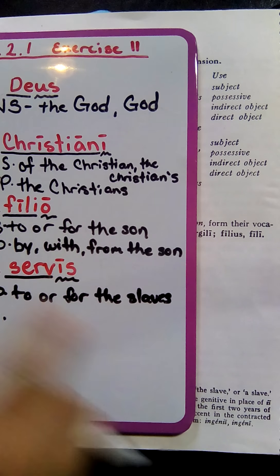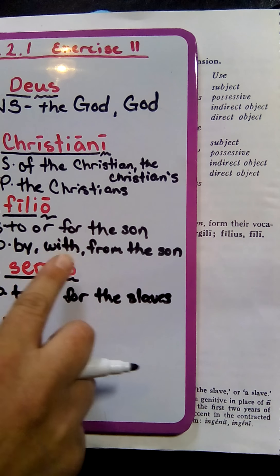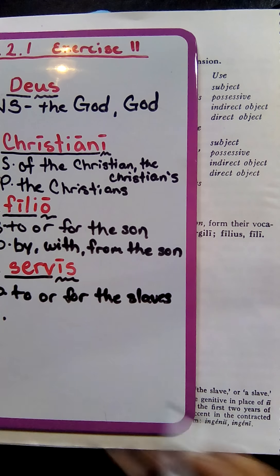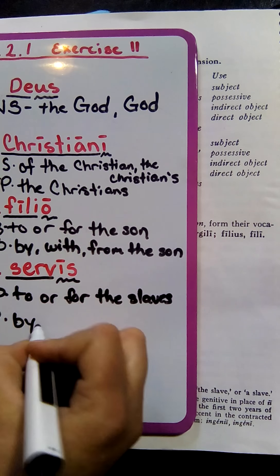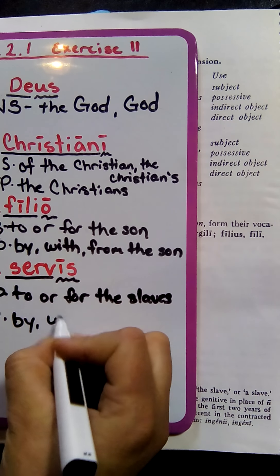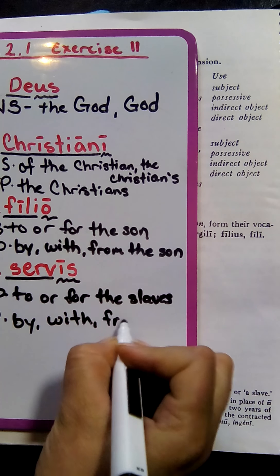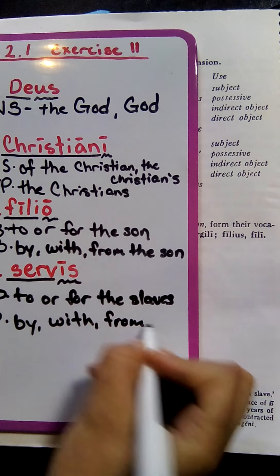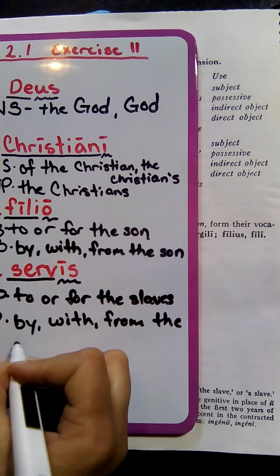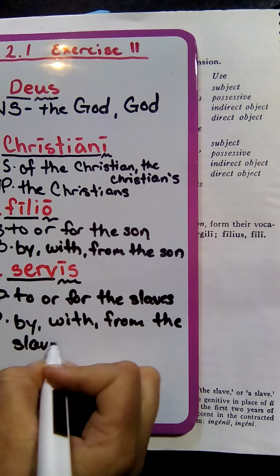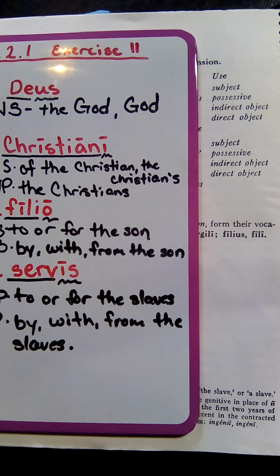And then also with the ablative, much like the singular, this is "by, with, or from" — so we'll write "by, with, or from the slaves." Hopefully that's helpful.